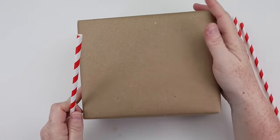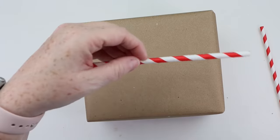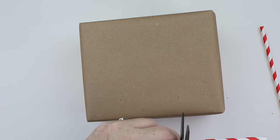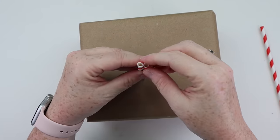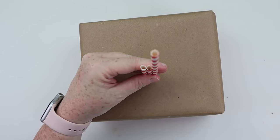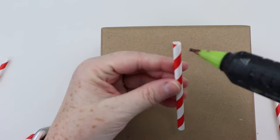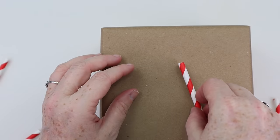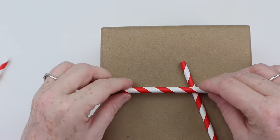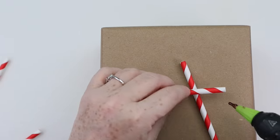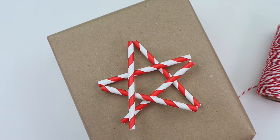This next DIY is a gift wrap idea using Dollar Tree supplies. You're going to want to grab some of their brown packing paper and wrap your present, then grab some red and white straws. You're going to need three straws. So basically you're going to cut them in half and you're going to need five pieces of the straw. Once you get those five pieces, make a star shape on top of your package. I'm just going to use some hot glue to go ahead and tack these down in place.